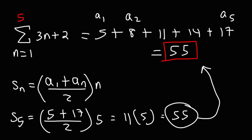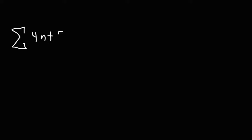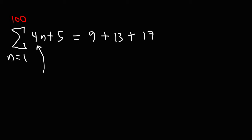Now why is that important? Sometimes you might be given a problem that requires finding a sum to a very large number — you don't want to add 100 terms because that's too time consuming. Instead, use that formula. When n is 1, 4 times 1 plus 5 is 9. When n is 2, 4 times 2 is 8 plus 5 is 13. When n is 3, 4 times 3 is 12 plus 5, that's 17. So we can see the common difference is 4.